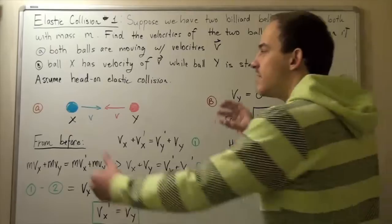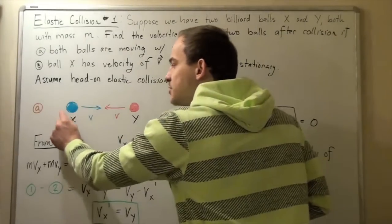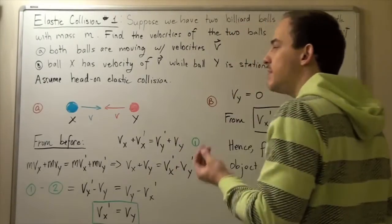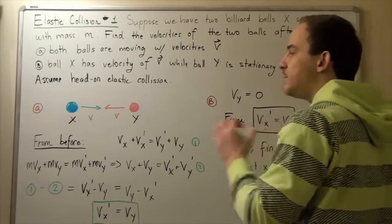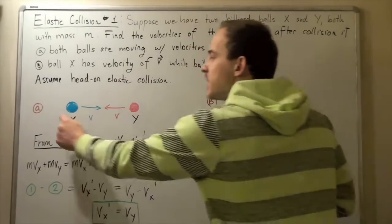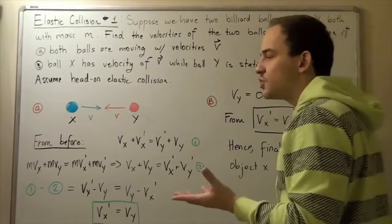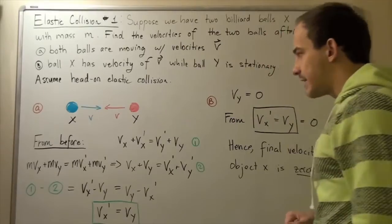So what happens is they simply exchange velocities. If this initial velocity was 10 meters per second and this was 10 meters per second negative (since negative is this way and positive is this way), that means once they collide, this ball will begin moving in the opposite direction with a magnitude of 10 meters per second. This will have negative 10 meters per second.